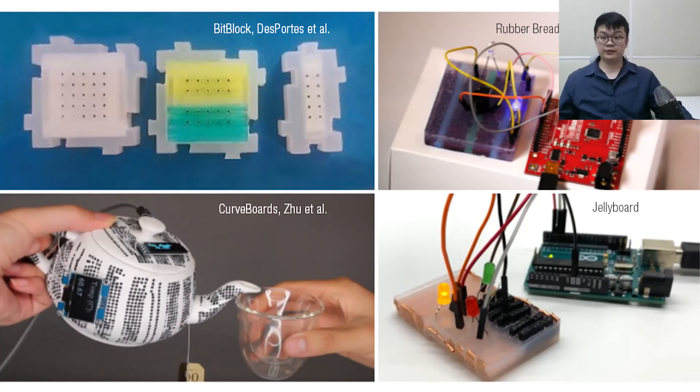Supporting makers and designers in interaction prototyping has also been the focus of inspiring research in the past. As an example, BitBlock suggested modular mini breadboards that improved interaction prototyping, but were still rigid. Du and colleagues proposed a Curveboard, where the breadboard layout is directly integrated into a 3D-printed copy of the prototype. Finally, Rubber Breadboard and Jellyboard are closest to our research and demonstrate silicone casted patches that use conductive materials in a breadboard layout. However, they have to be manually casted.